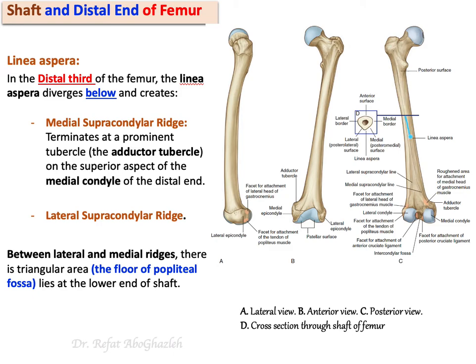Continuing distally, the linea aspera diverges inferiorly into a lateral supracondylar line and a medial supracondylar line, named because they are above the condyles. The medial supracondylar line, as it continues toward the medial condyle, ends in a small tubercle called the adductor tubercle, which is the attachment site for the adductor muscles.